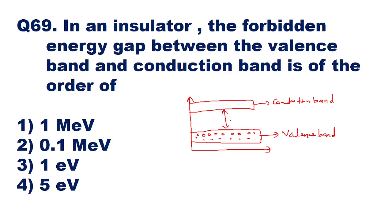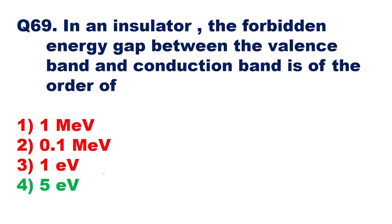Out of these options, option number four — that is 5 electron volt — is the right answer, which shows that the forbidden energy gap is very large. Therefore we require a very high electric field to push the valence electrons from the valence band to the conduction band. So for an insulator, the forbidden energy gap between the valence band and conduction band is of the order of 5 electron volt.